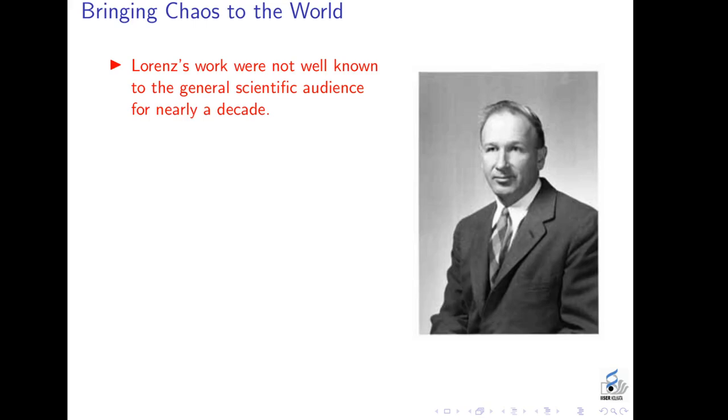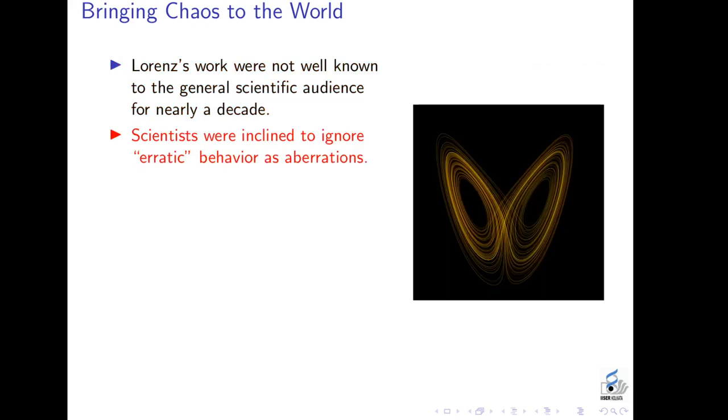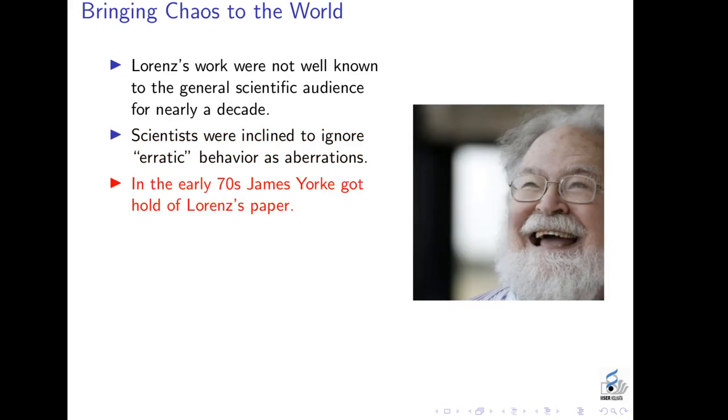After all, Lorenz's work was published in a meteorological journal, and the general scientific audience, especially the physics or the mathematical audience, didn't really respond very well to that. They didn't even know about its existence. And at this stage, most scientists were inclined to ignore erratic behavior as aberrations. Something that might have happened because some instrument acted up, or maybe something happened from outside which was not under your control, and so on.